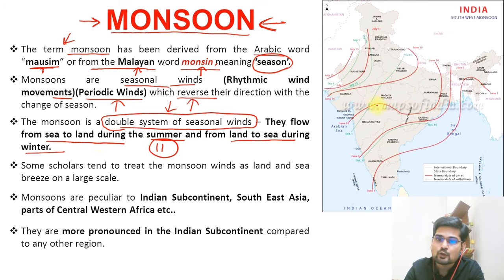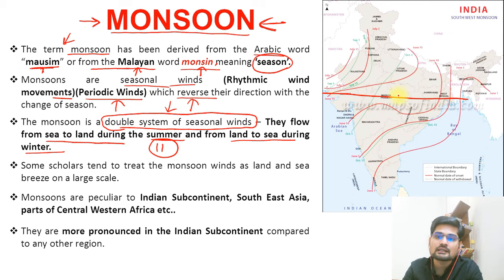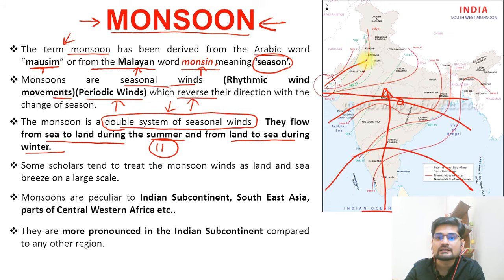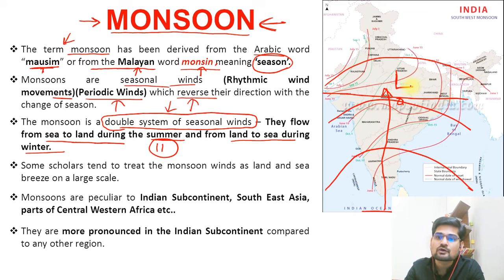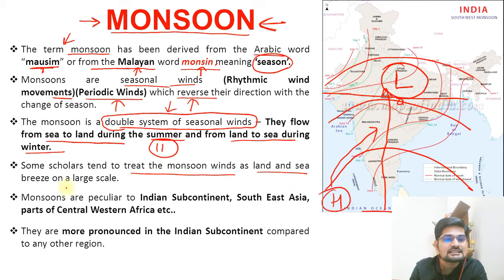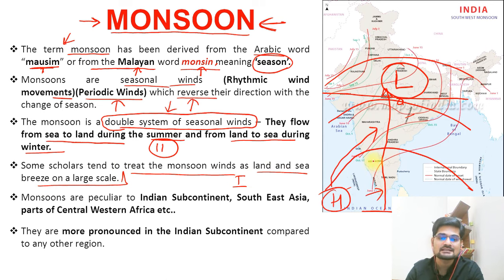During summers, there is low pressure on the land. The sun is overhead near the Tropic of Cancer, and as the sun moves from the equator toward the Tropic of Cancer, the pressure belts also shift along with it. So there is low pressure on the land and high pressure in the ocean — a differential is created, and wind flows from high to low. Some scholars treat monsoon winds as land and sea breeze on a large scale; that is the basic connection.